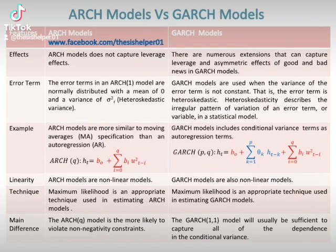The error terms in an ARCH(1) model are normally distributed with a mean of 0 and a variance of sigma-i-squared heteroscedastic variance. Whereas GARCH models are used when the variance of the error term is not constant — that is, the error term is heteroscedastic.